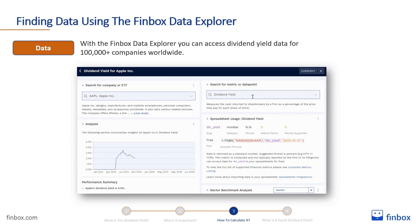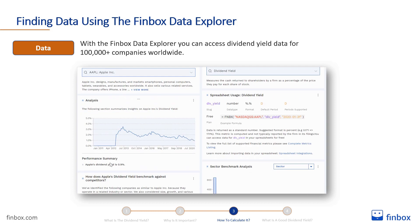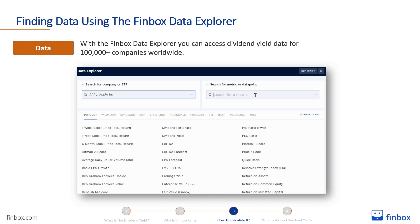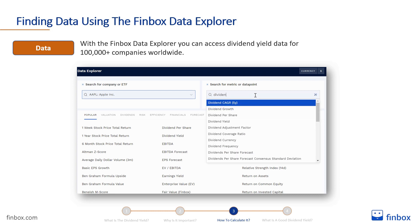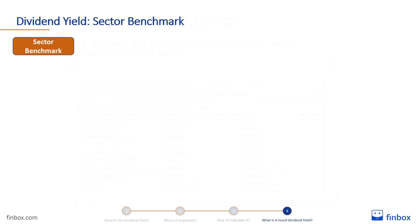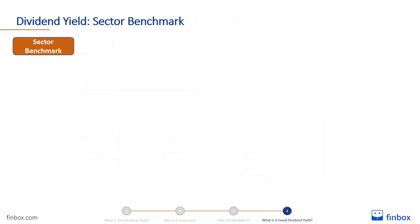You don't need to do the calculation alone, and you don't have to use a dividend yield calculator. You can use the Finbox Data Explorer to access dividend yield data for over 100,000 companies worldwide. The average dividend yield varies greatly among different sectors, so it is very useful to compare a company to its sector while evaluating its dividend yield.